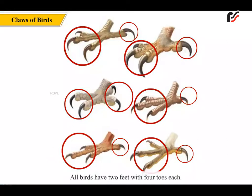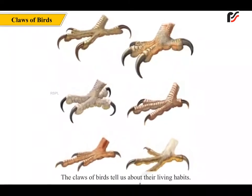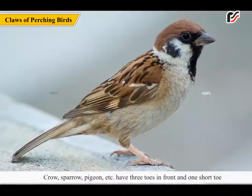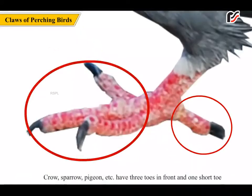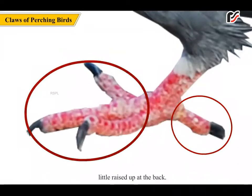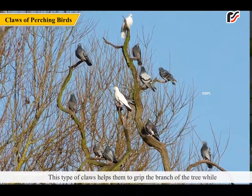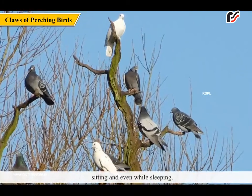All birds have two feet with four toes each. The claws of birds tell us about their living habits. Crow, sparrow, pigeon, etc. have three toes in front and one short toe slightly raised at the back. This type of claw helps them to grip the branch of a tree while sitting and even while sleeping.